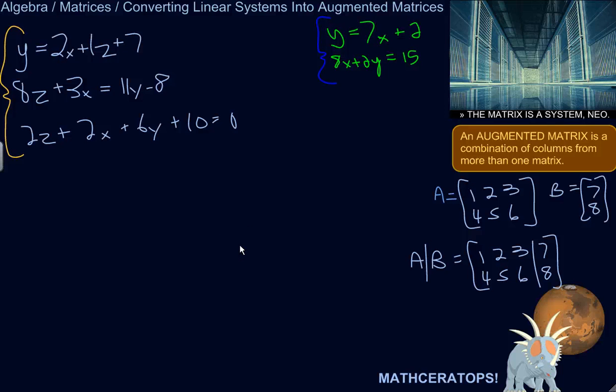A system of linear equations is a group of more than one linear equations, equations that would form a straight line if you were to graph them, in which the variables have the same meaning, so they're solved simultaneously.